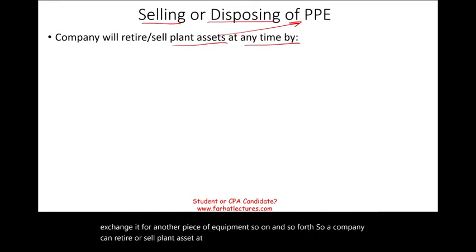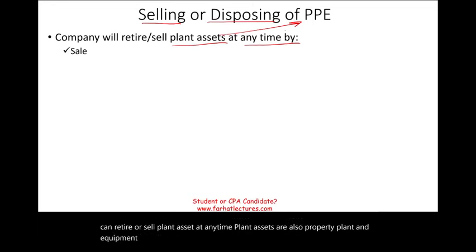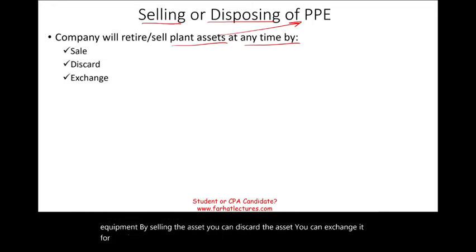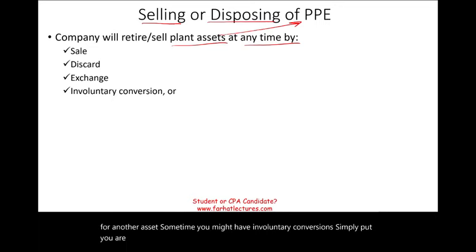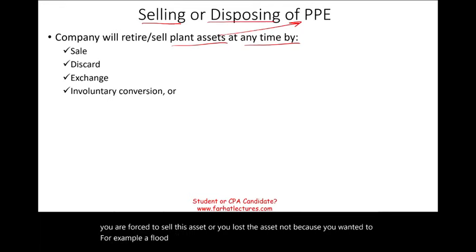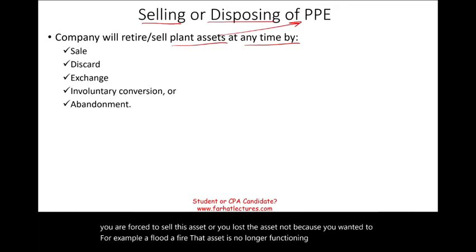Plant assets are also referred to as property, plant, and equipment. By selling the asset you can discard it or exchange it for another asset. Sometimes you might have involuntary conversion — you are forced to sell or you lost the asset not because you wanted to. For example, a flood or a fire destroys the asset. This is called involuntary conversion or abandonment.